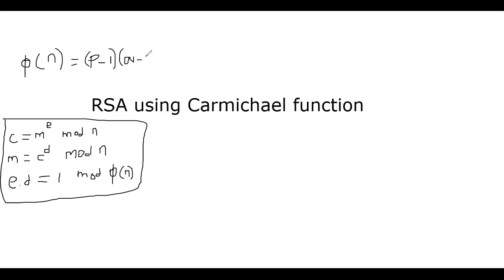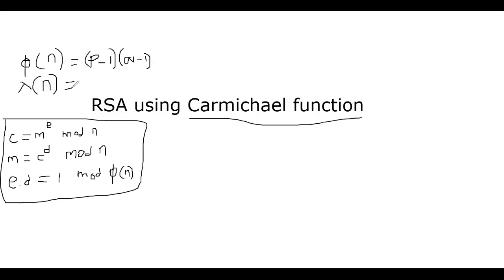On the other hand, the Carmichael function — I won't define it too precisely — can be written as: λ(n) = LCM(p−1, q−1), the least common multiple of p minus 1 and q minus 1. Let me quickly recall what LCM is.